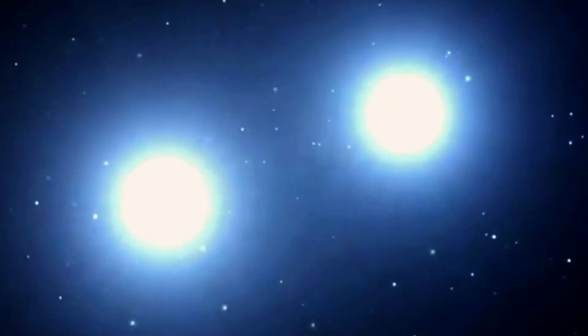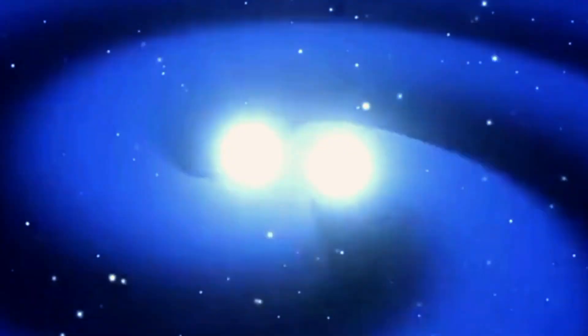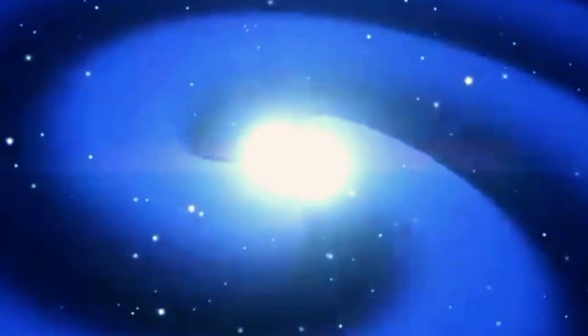Many neutron stars spin rapidly, emitting beams of radiation from their magnetic poles. When these beams cross our line of sight, we observe pulsars, which are incredibly precise cosmic clocks.